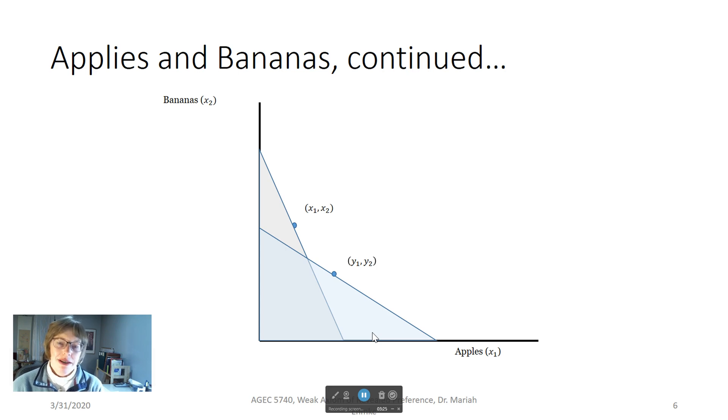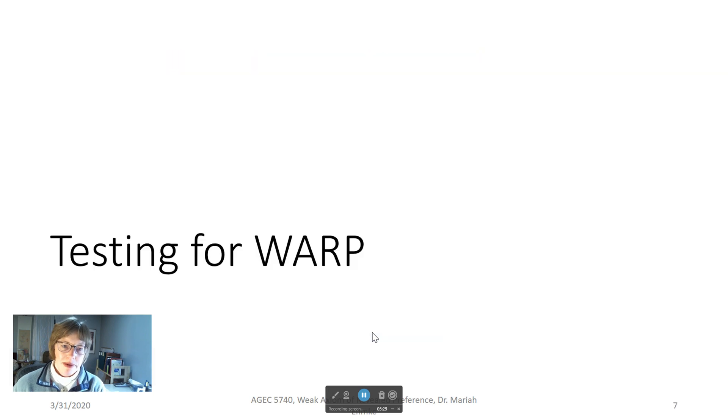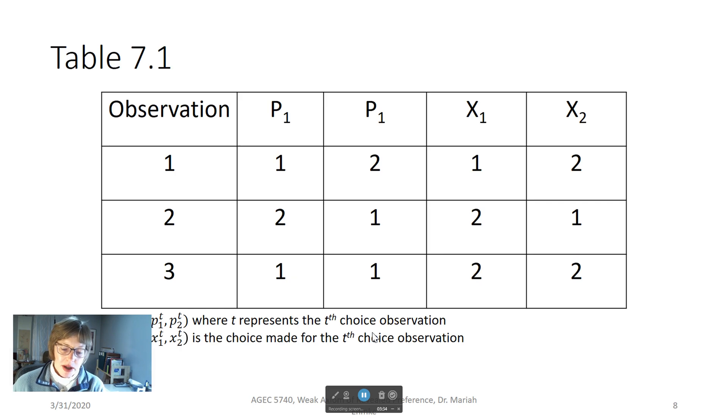We can use demand and price information to check and make sure consumers are following WARP. In other words, we can systematically test for WARP. We can do this using observations on bundles of goods they purchase at different prices.